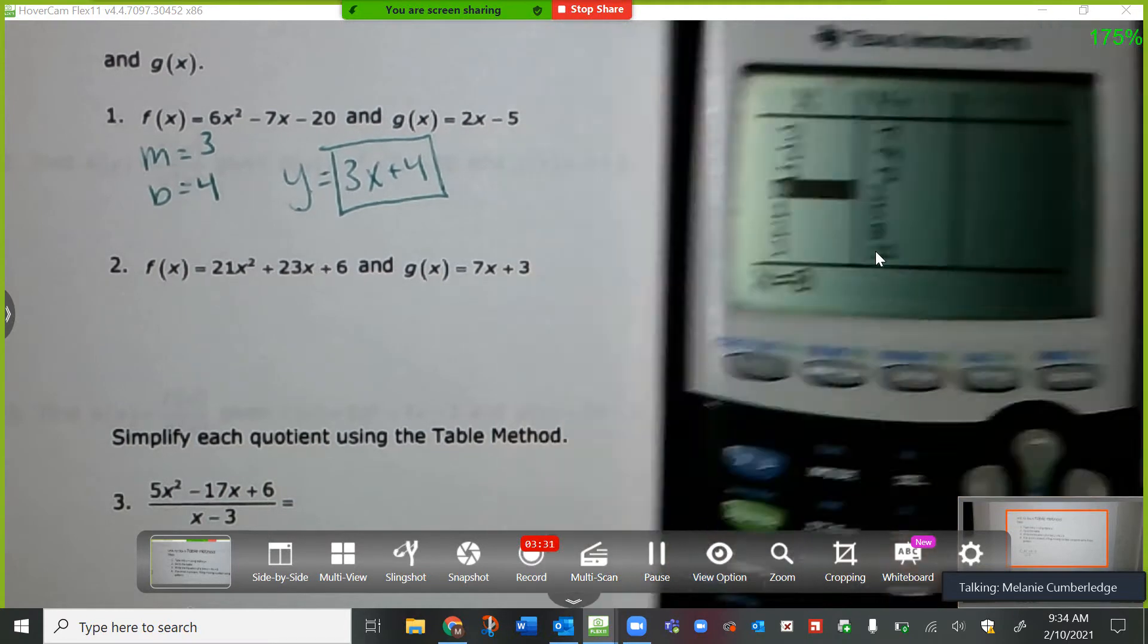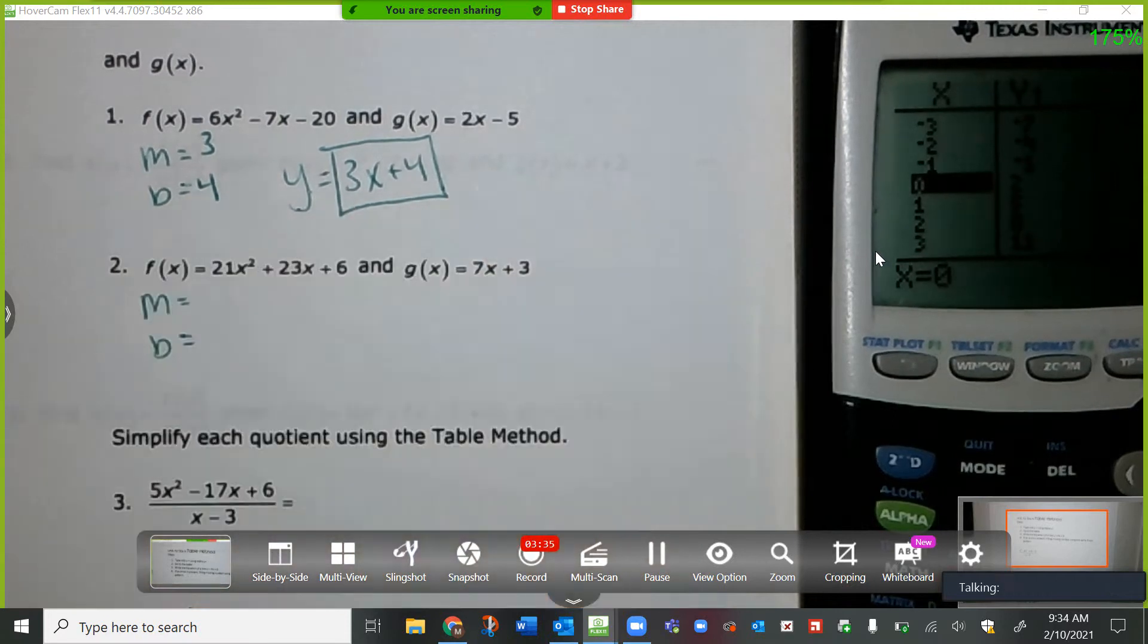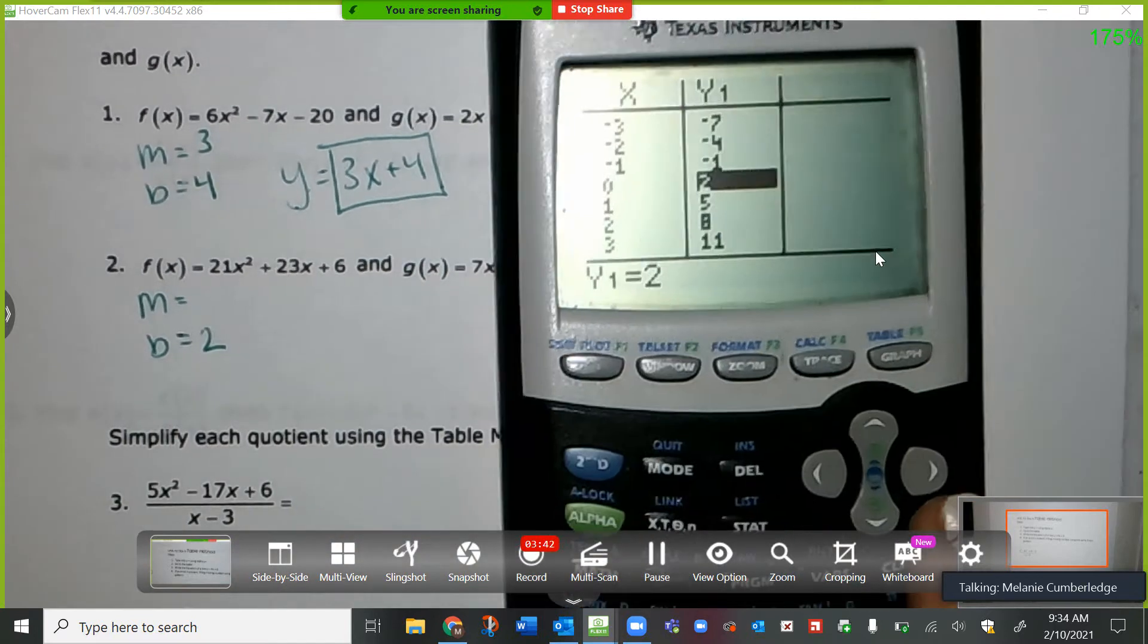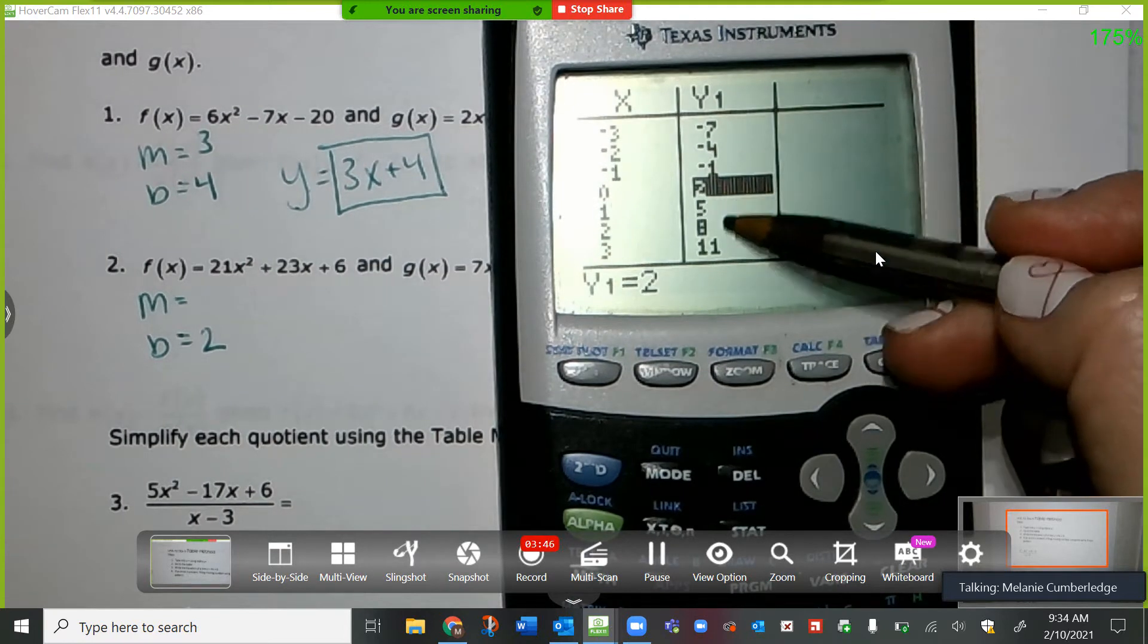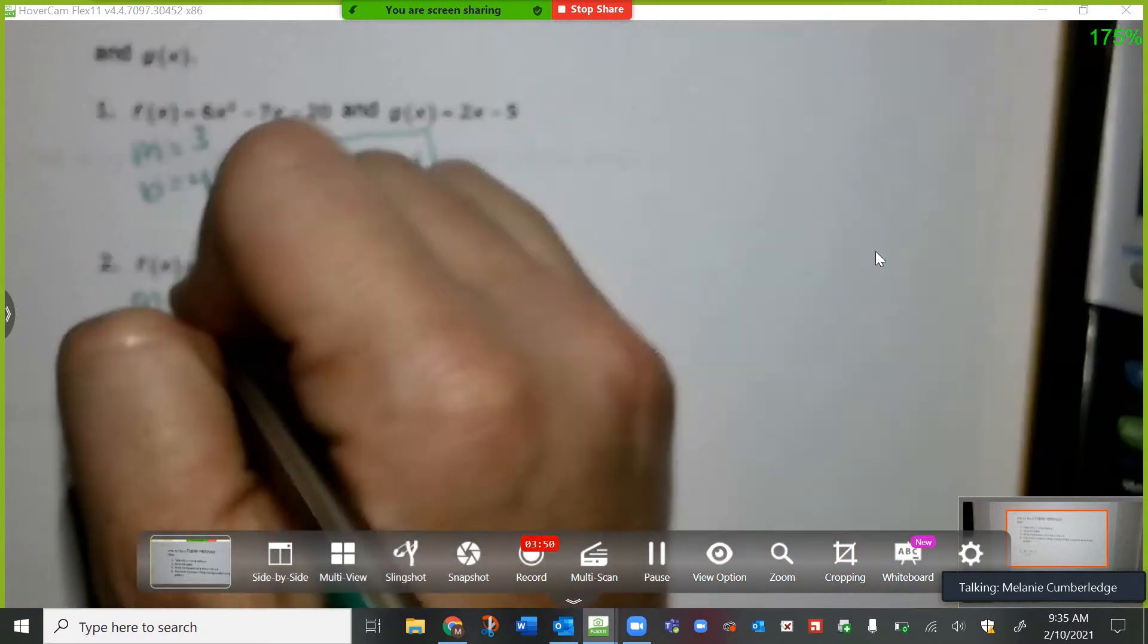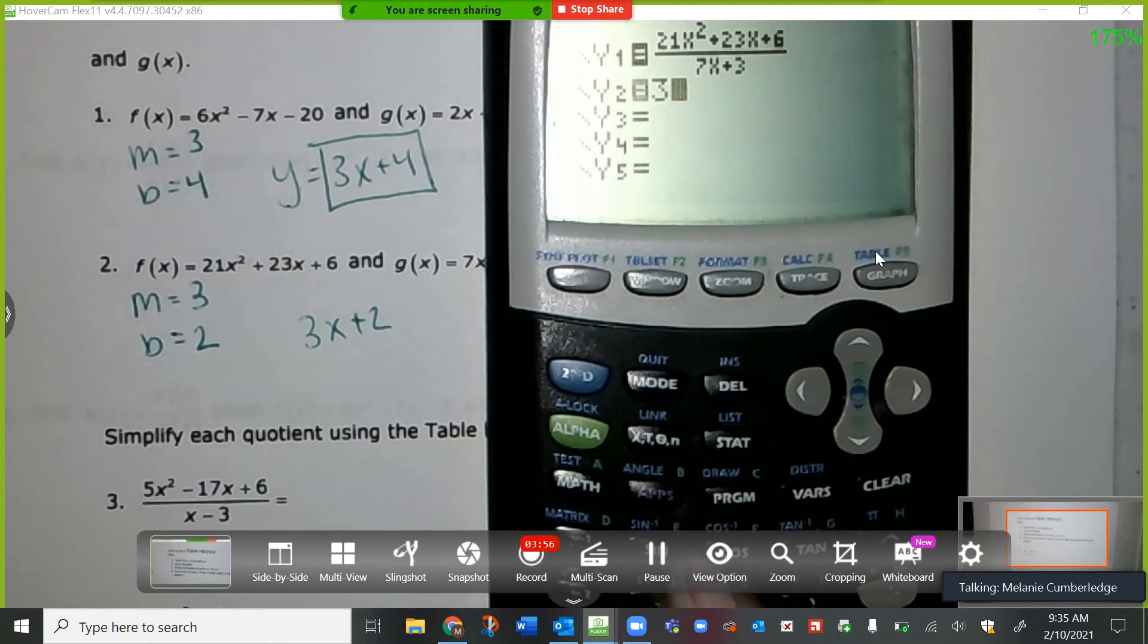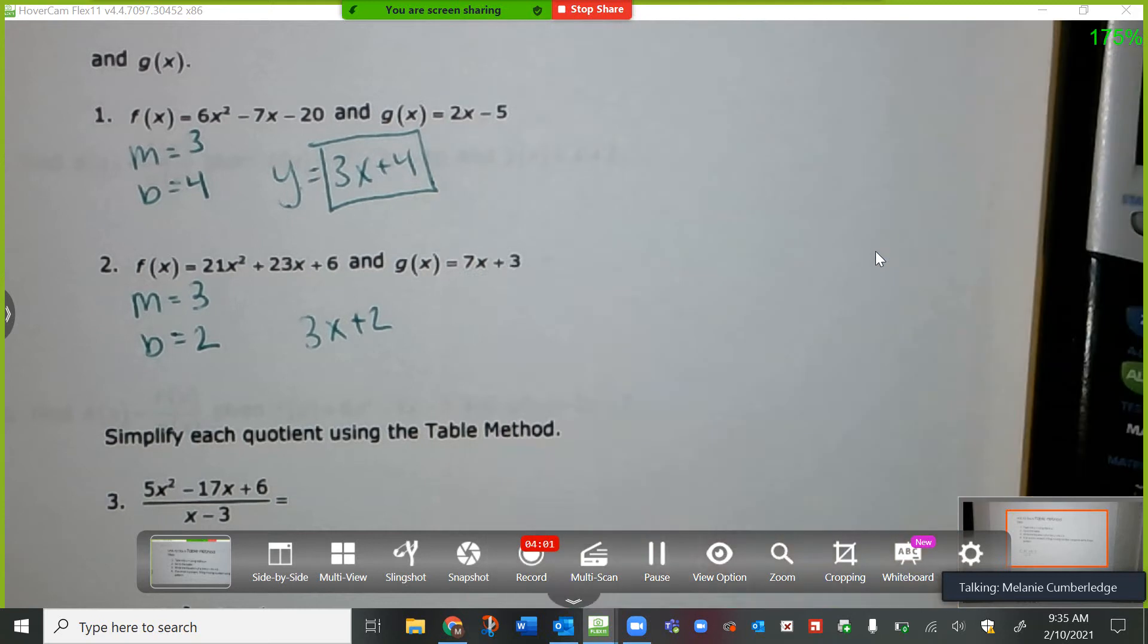Now remember, we're looking for m and b. So b is where x is 0. So x is 0 here at 2. And m is how much it's growing. So 2 plus 3 is 5, plus 3 is 8, plus 3 is 11. So this should be again 3. So let's try 3x plus 2 and see if that matches. And they match. Therefore, that is my answer.